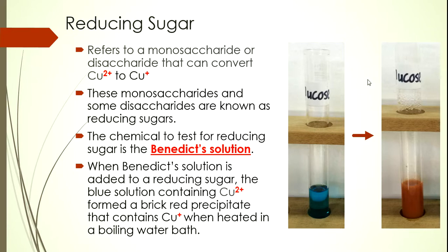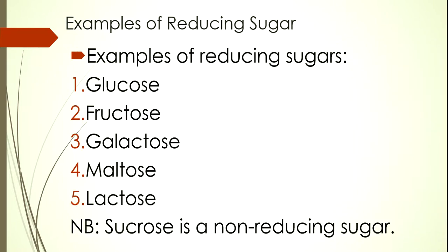The chemical used to test reducing sugars is known as Benedict's solution. This solution is blue in colour and contains Cu2+. If there is a reducing sugar, it will change to give a brick-red precipitate. Examples of reducing sugars include glucose, fructose, galactose, maltose, and lactose. Take note: sucrose is a non-reducing sugar.